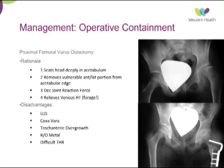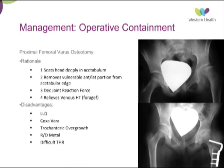Operative options include proximal femoral varus osteotomy, one of the two major treatment modalities. The osteotomy is made in the subtrochanteric region and the femoral head is rotated and reduced back into the acetabulum. This maintains sphericity, allows congruence, and the head then remodels. The rationale is that rotating the femoral head provides better containment within the acetabulum.